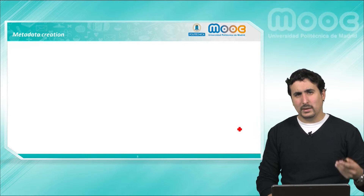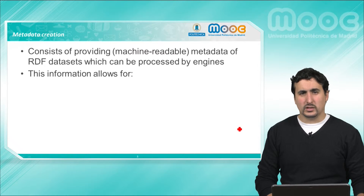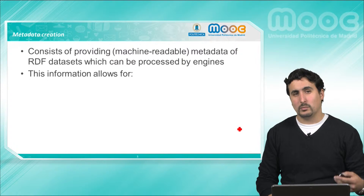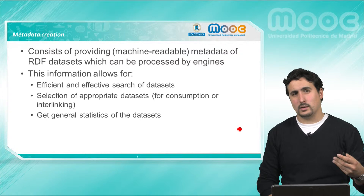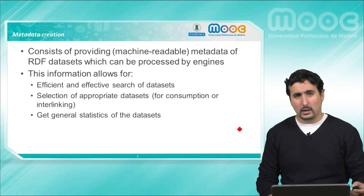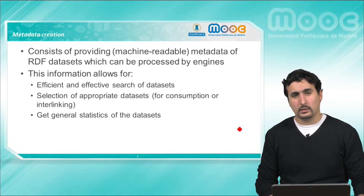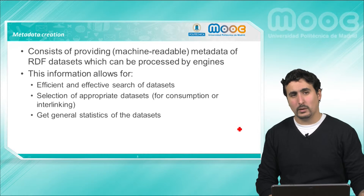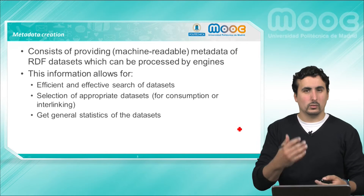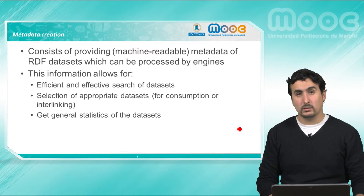So the first step is to add metadata to our data set. We have to include machine readable descriptions of our RDF so as to make it automatically indexable by machines. This information will allow to perform such processes over our data set as well as for identifying its content. This is very important when we study a data set for consuming its information, or when we are looking for links to other data sets. This should also include statistics about the content of our data.